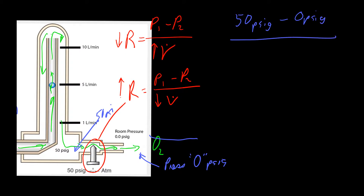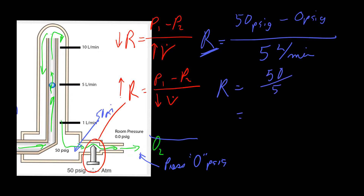Now we don't know what the resistance is, but because of where the ball is held within the Thorpe tube — and because this is precisely calibrated for 50 psi pressure gradients — we'll be able to know our flow rate precisely. At this time it is five liters per minute. So we'll be able to do the calculation and figure out what our resistance is. We can say our resistance is equal to 50 divided by 5, which equals 10 psi per liter per minute.